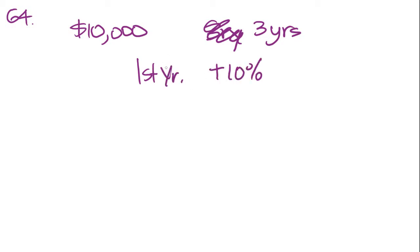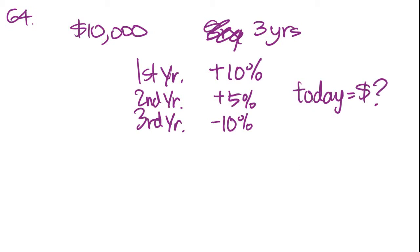Alright, number 64. Number 64 says Lucy invested $10,000 in a new mutual fund account exactly three years ago. The value of the account increased by 10% the first year, increased by 5% the second year, and decreased by 10% during the third year. They're asking what is the value of the account today.